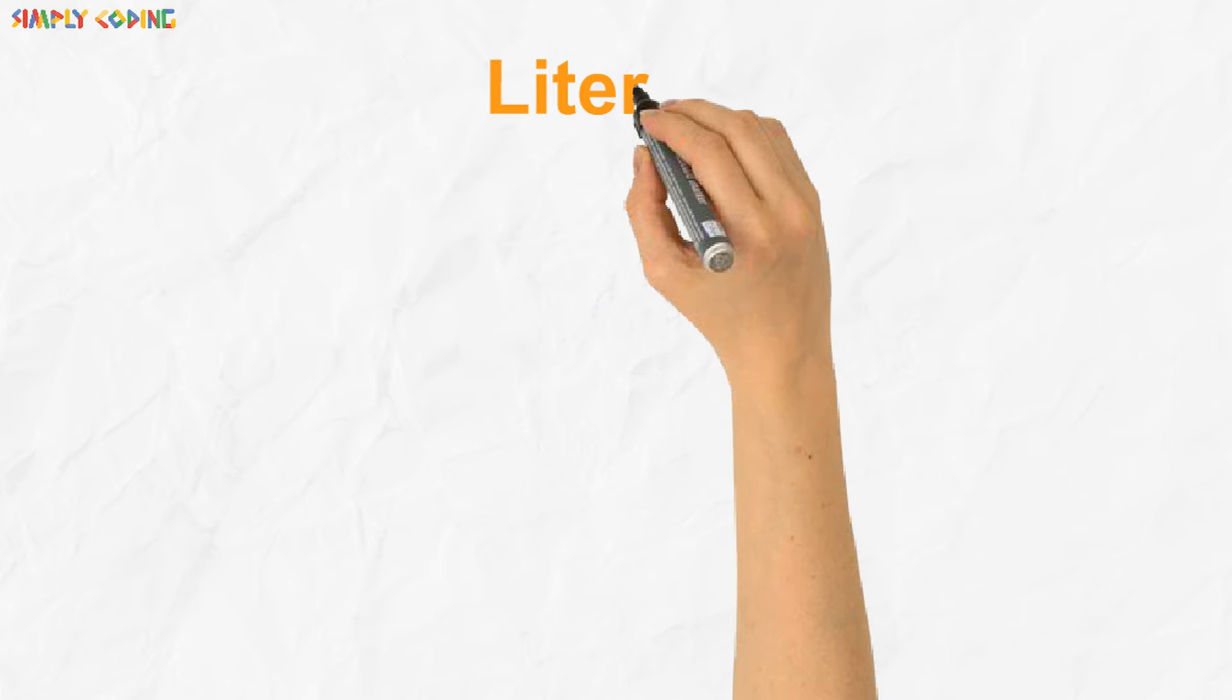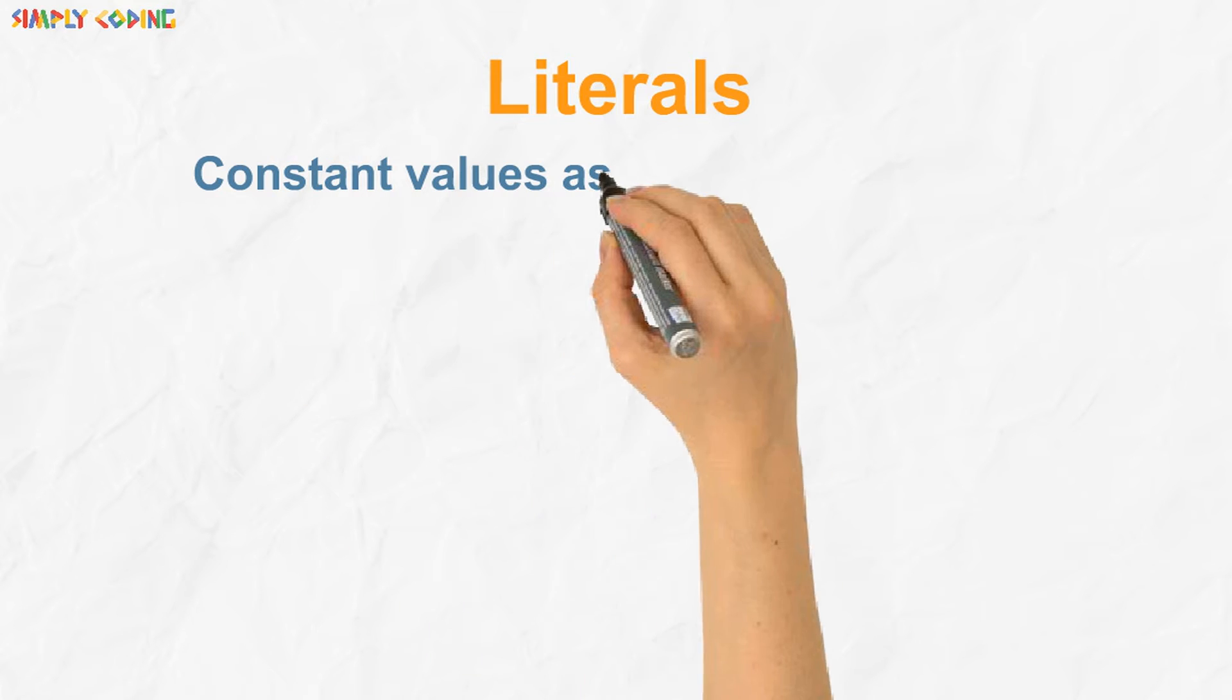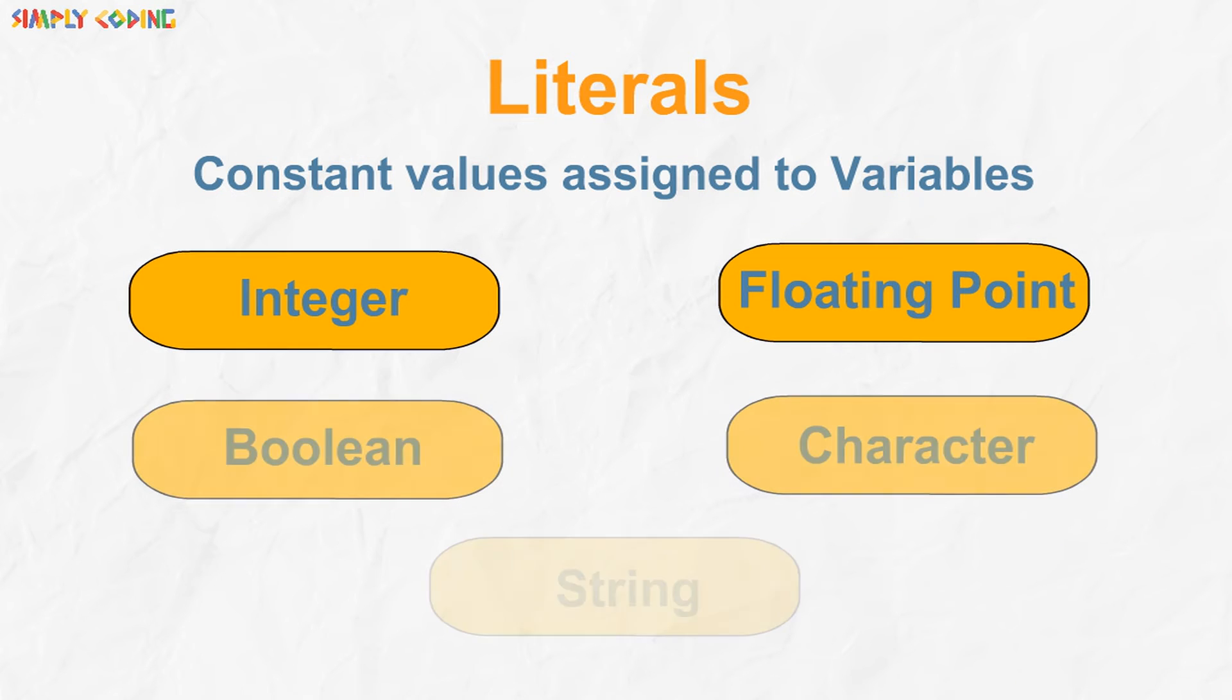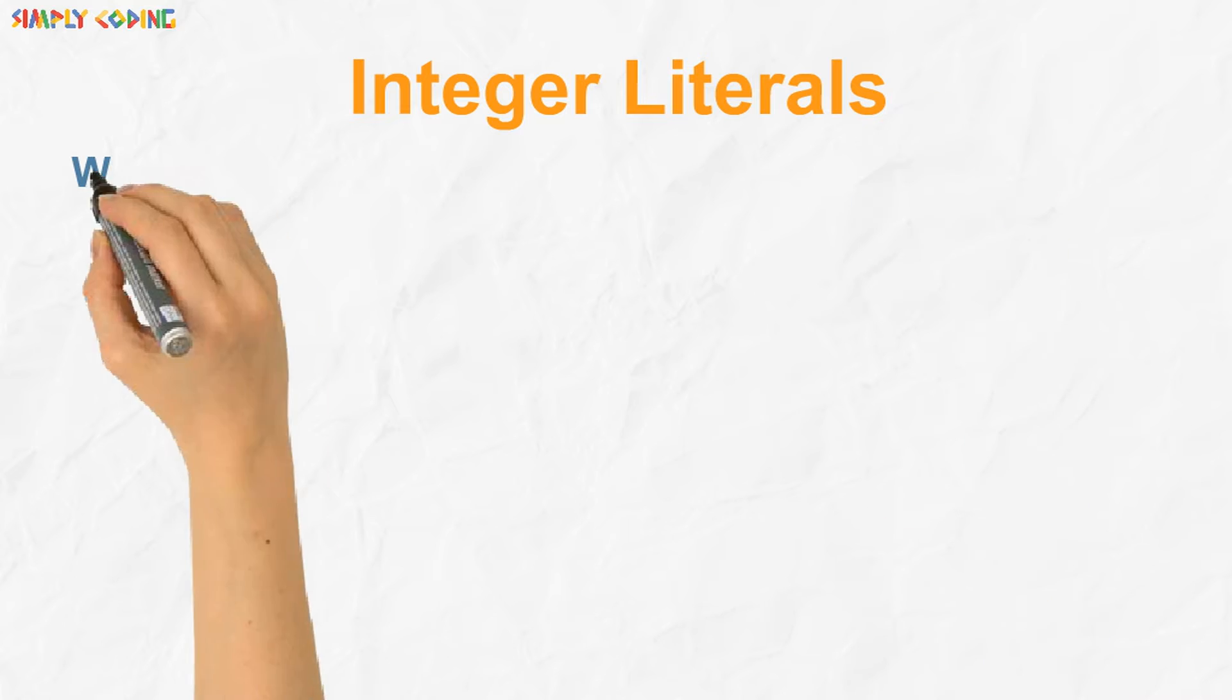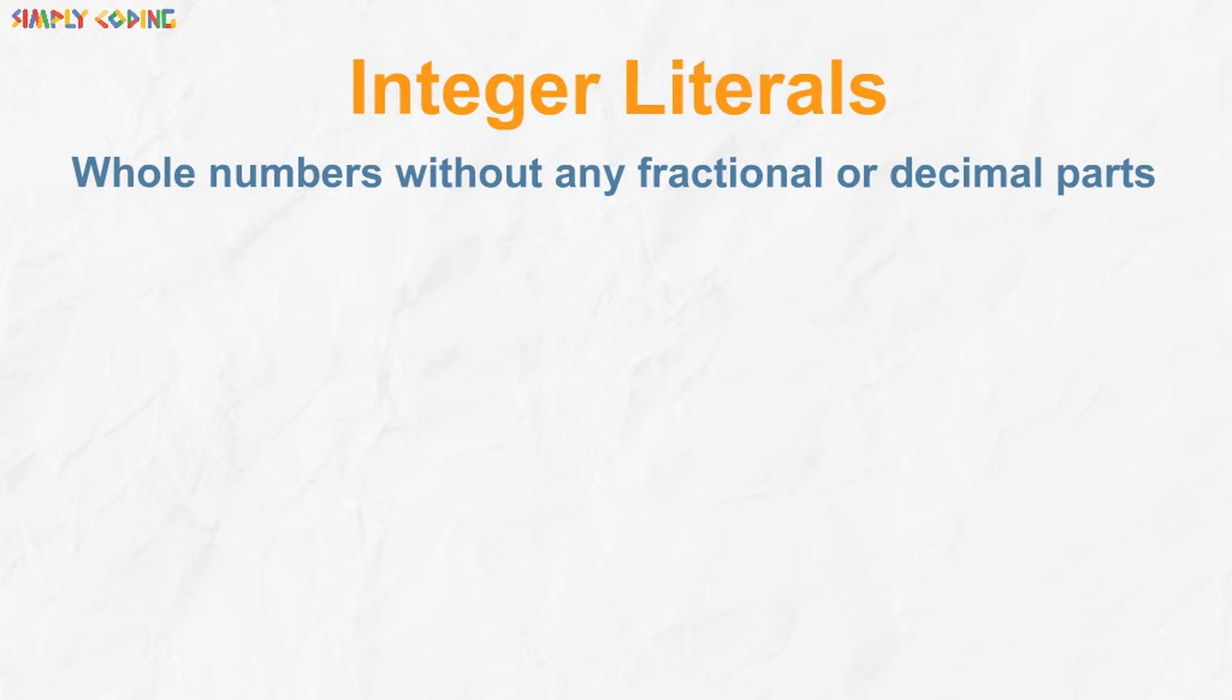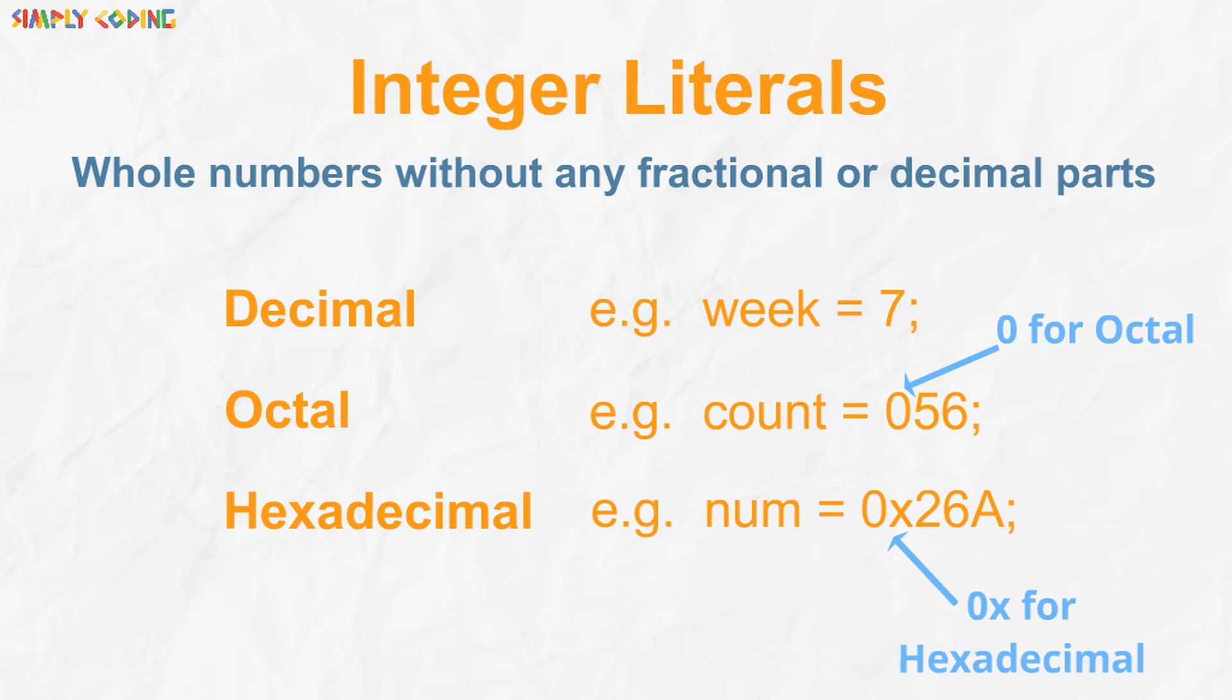Now we are going to take a look at next token which is literal. Literals are constant values assigned to variables. Let's look at some type of literals. First are integer literals which are whole numbers without any fractional or decimal parts. You can specify it in decimal, octal or hexadecimal format.